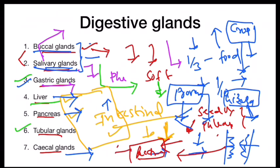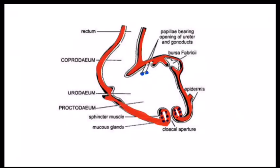From the rectum, fecal matter is released into the coprodium — the anterior chamber of the cloaca — through the anus. From the coprodium it reaches the urodium, where fecal matter gets mixed with urinary material. From the urodium, it reaches the proctodium, and from the proctodium it is released outside the body by the cloacal aperture. This completes the digestive glands, the physiology of digestion, and the alimentary canal of the bird.